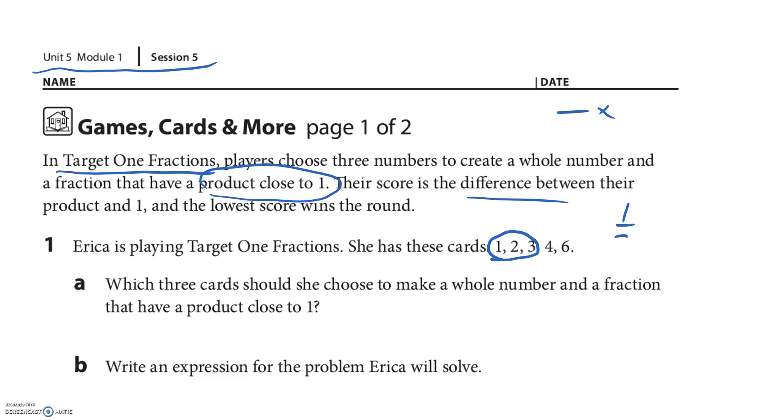So I like to go like one half of three equals three halves, which equals one and one half. Well, my score of one and one half is a half away from one, so my score would be one half. So I want to look at these numbers and see if there's three I can use that, when multiplied, I'd get one.